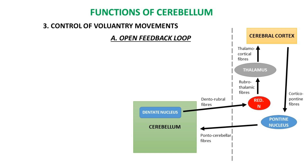Control of voluntary movements: the corticocerebellum takes part in the smooth performance of highly skilled voluntary movements. This is done with the help of two feedback loops.